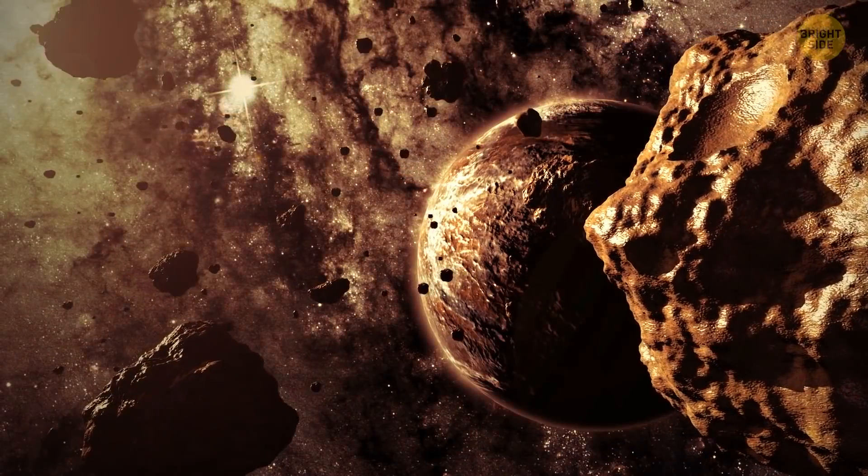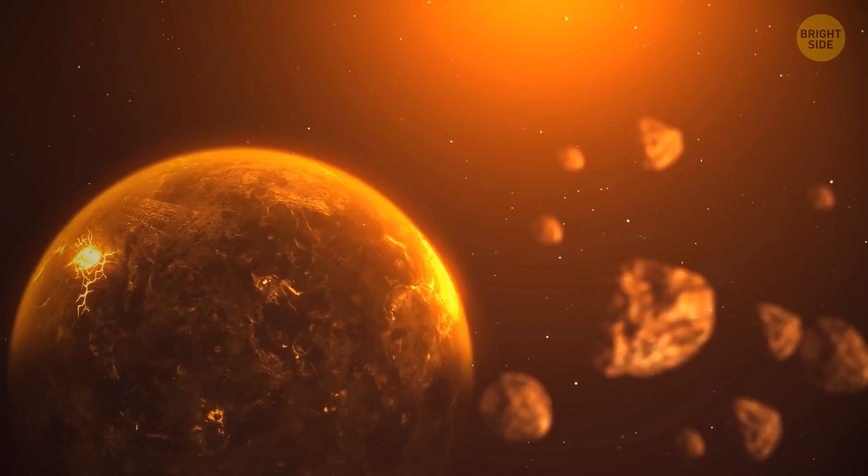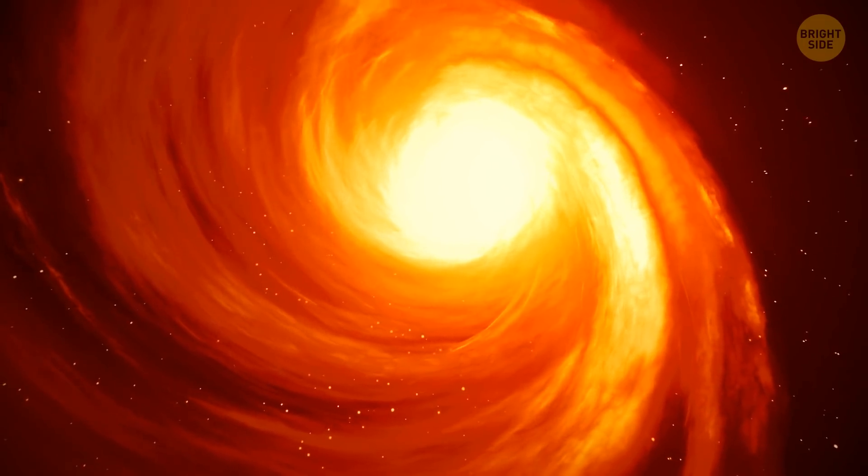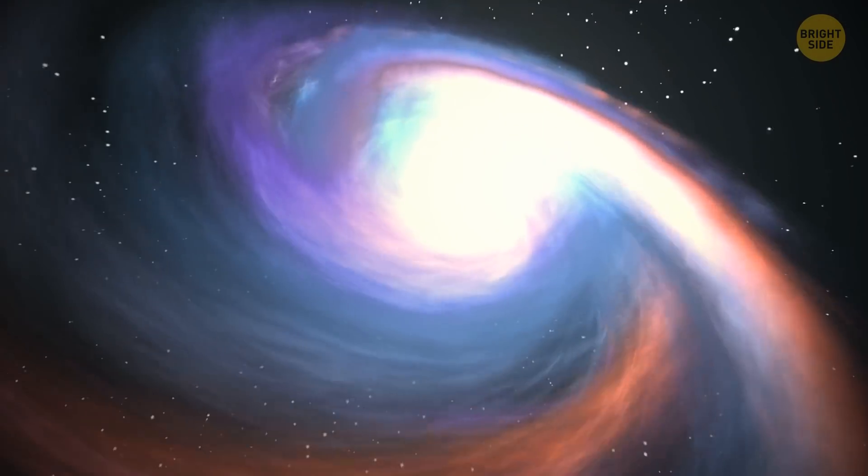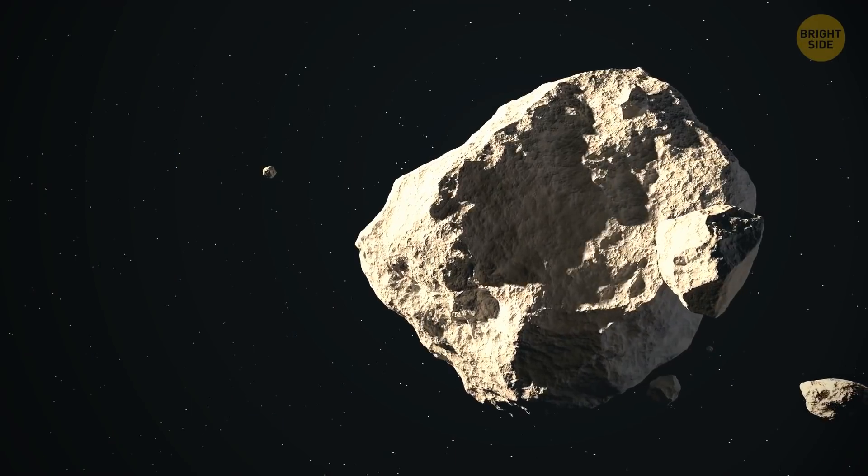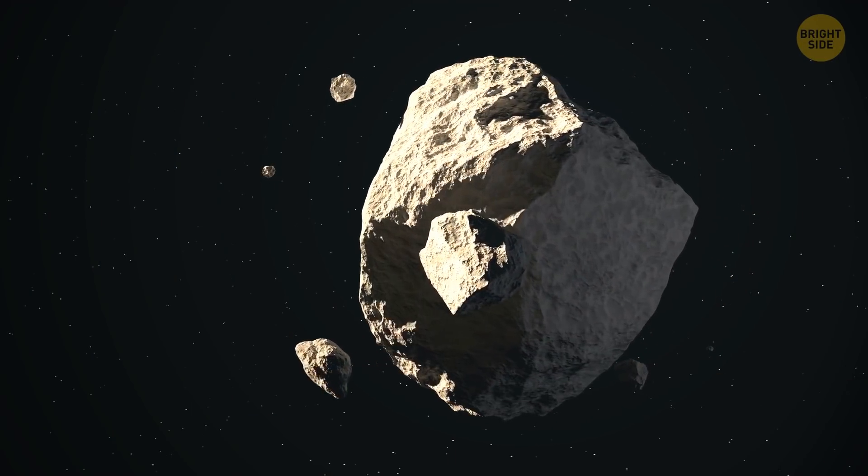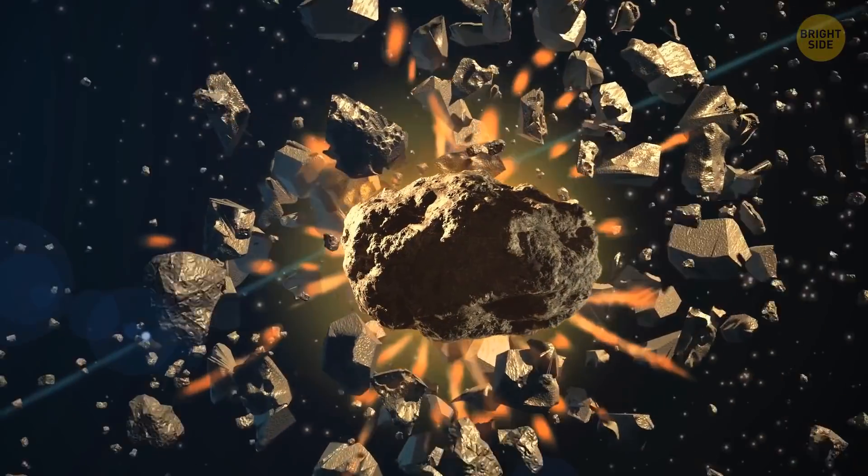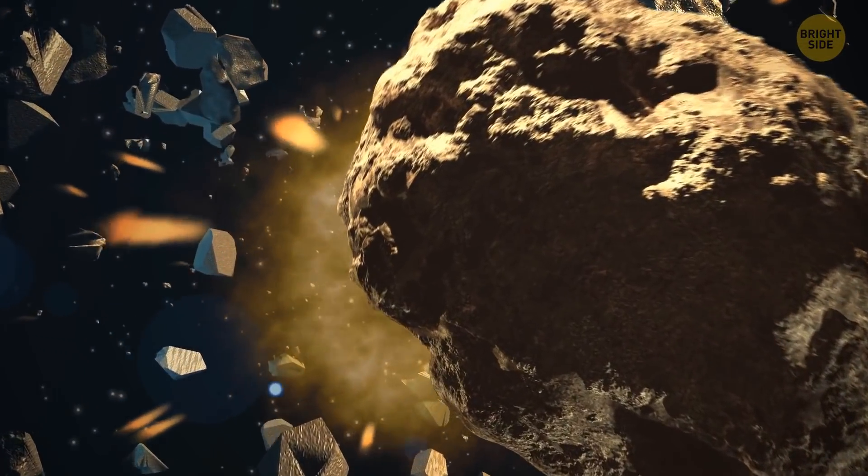Asteroids are actually some kind of leftovers that remain from the early stages of the solar system. The sun, as we know it, began to get its shape when compressed gases and atoms started blending into a protostar. Smaller grains of debris and dust around the sun formed into rocks, and as they were crashing into each other, they formed even bigger ones.